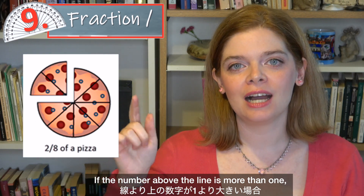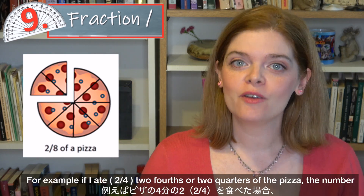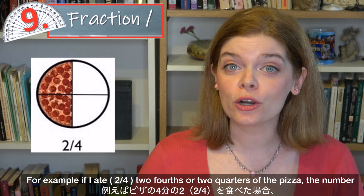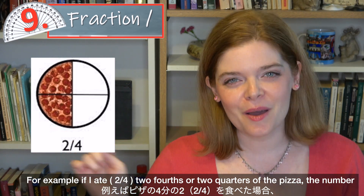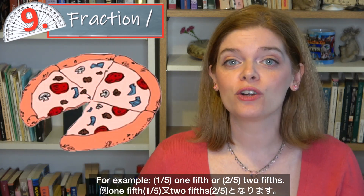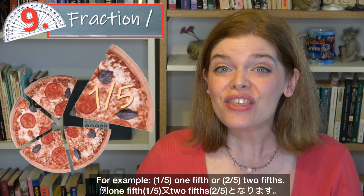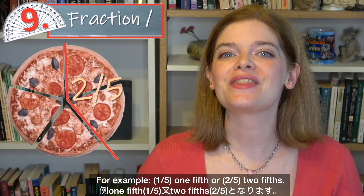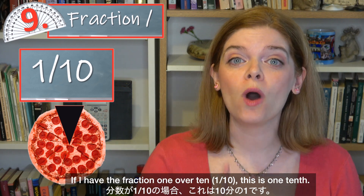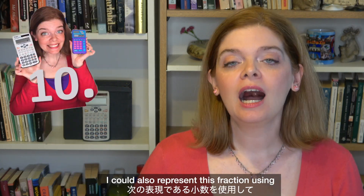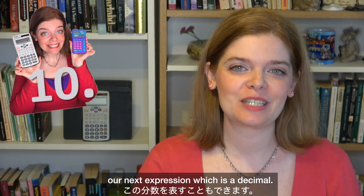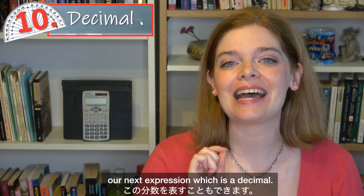If the number above the line is more than one — for example, if I ate two fourths or two quarters of the pizza — the number at the bottom needs to have an S on it. So for example: one fifth or two fifths. If I have the fraction one over ten, this is one tenth. I could also represent this fraction using our next expression, which is a decimal.